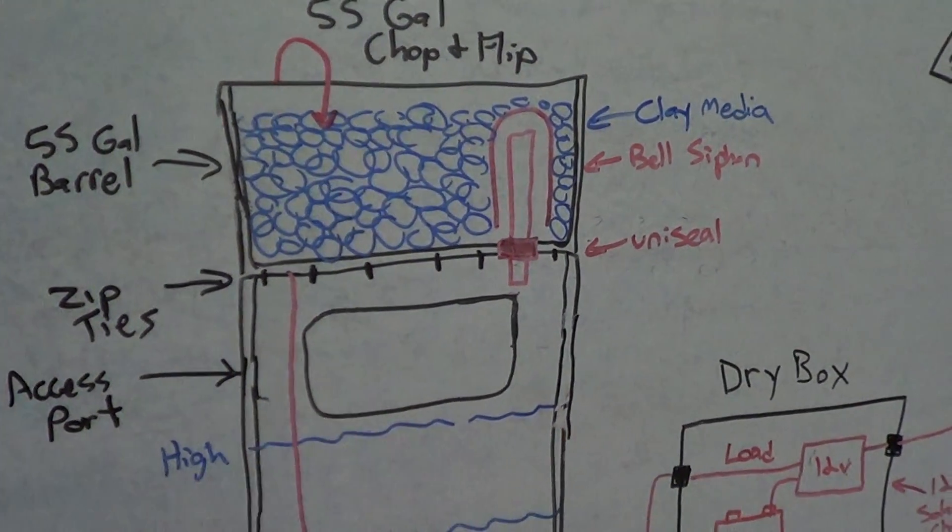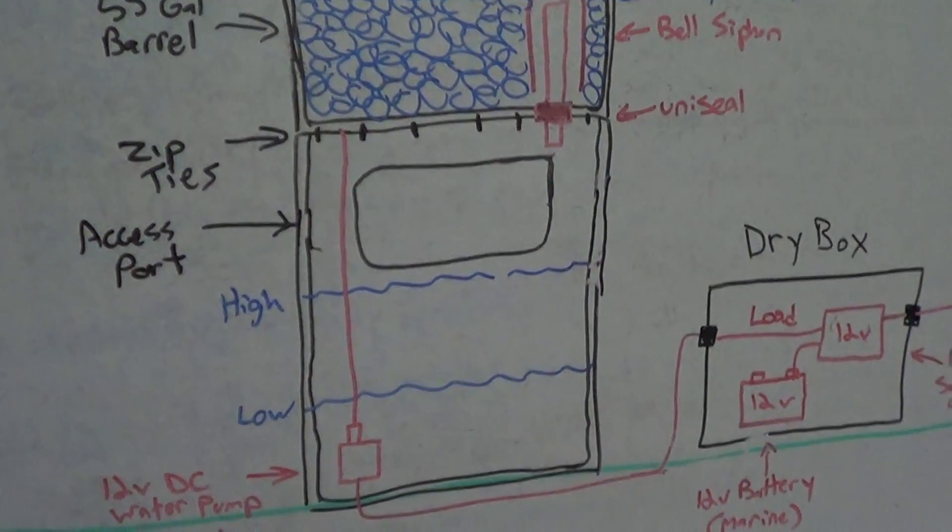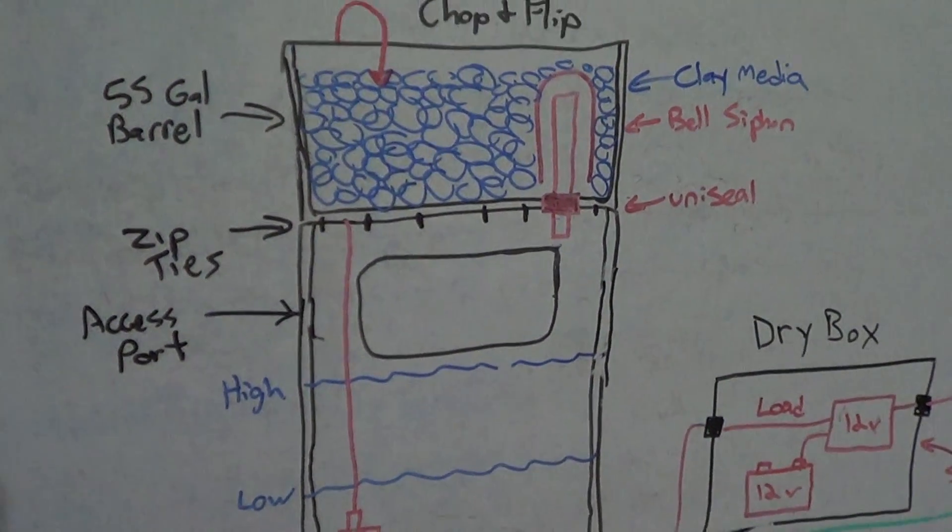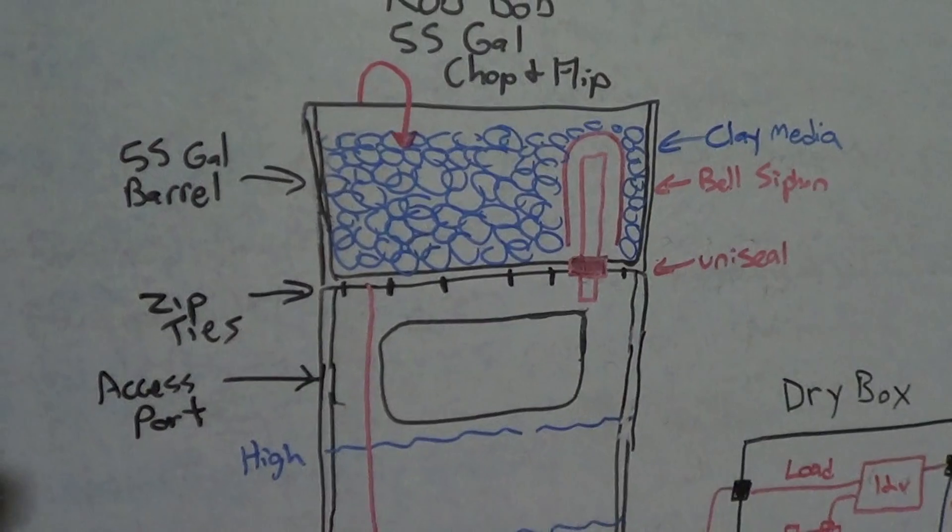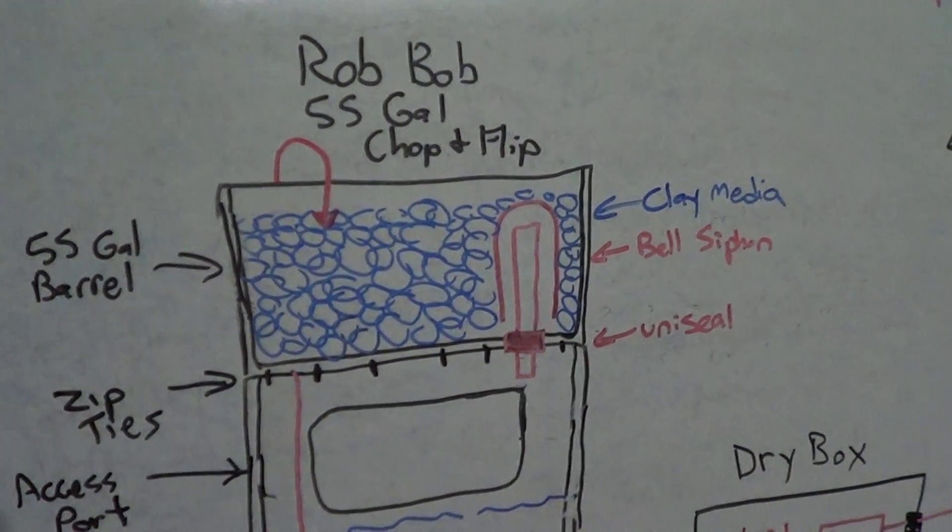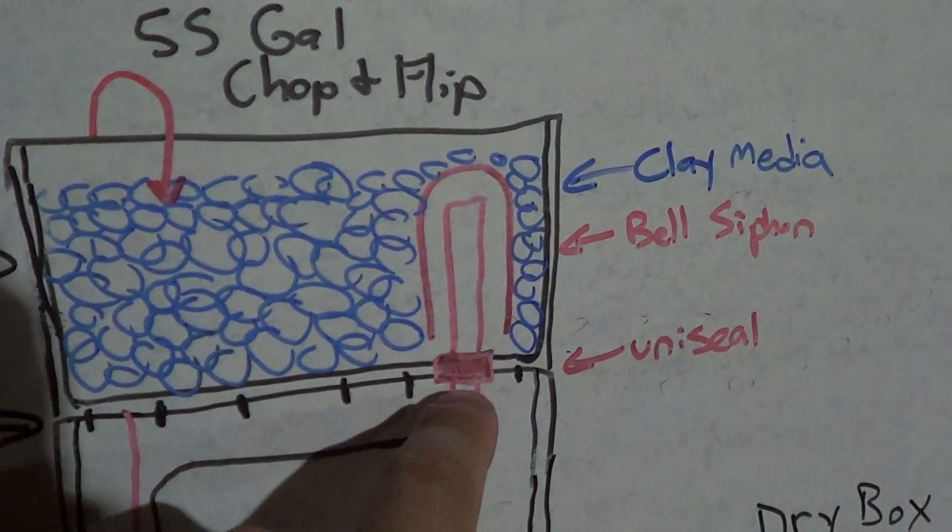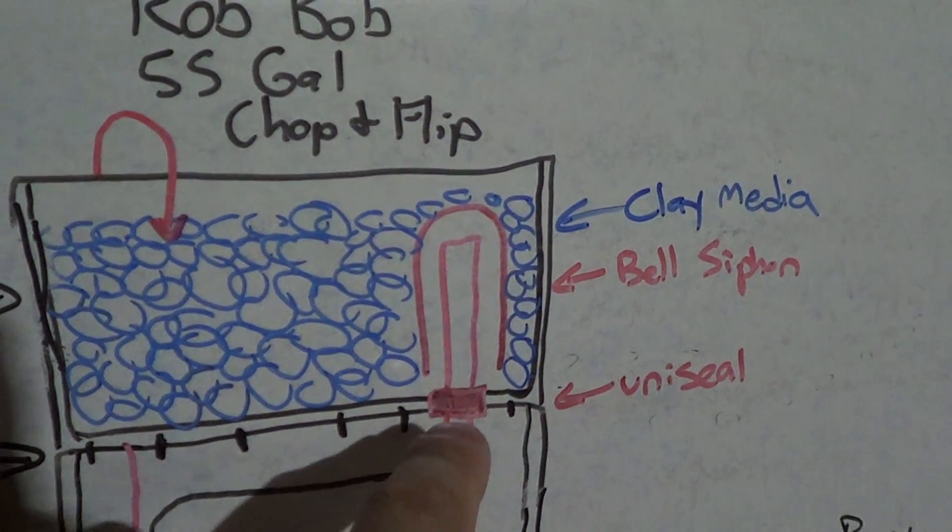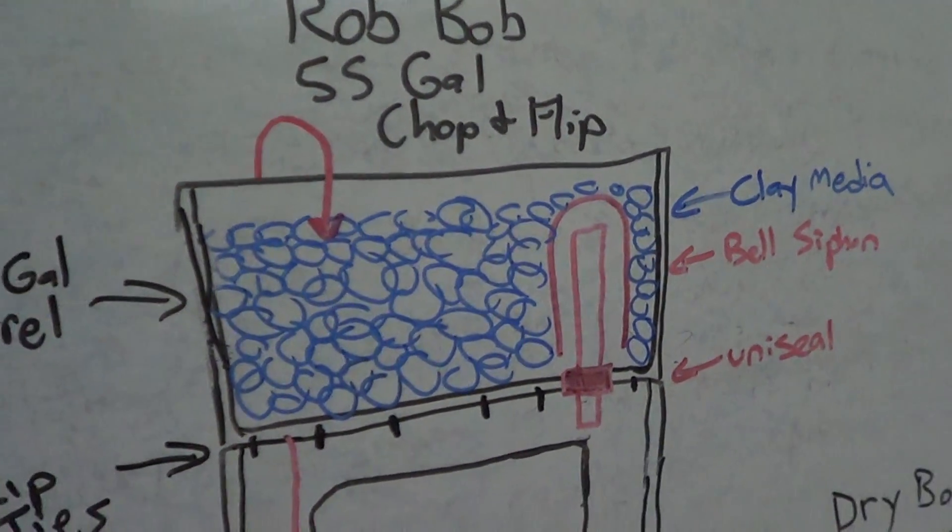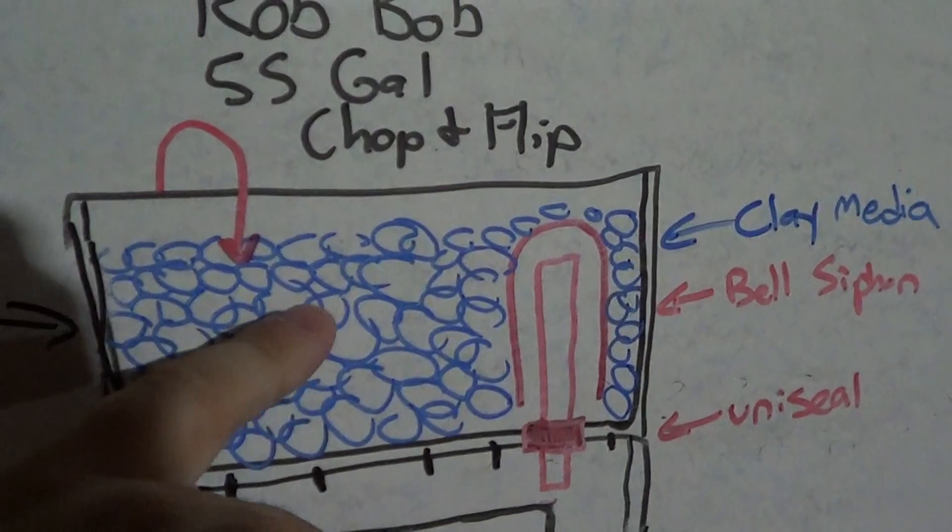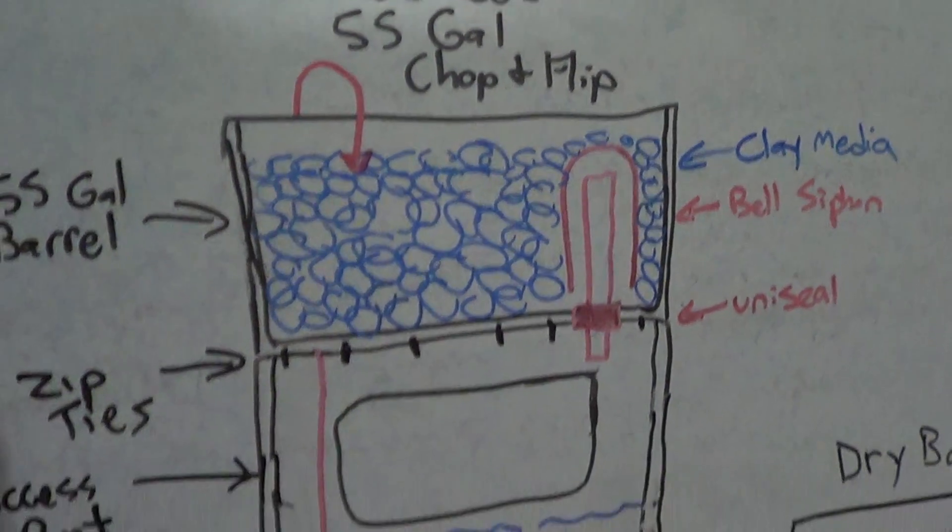You don't want to cut it too large because it will compromise the structural integrity of the barrel, but just one little port on the front would be plenty to reach your arm in there. With that, I'm planning on using a uniseal—I believe Rob Bob used a bulkhead. I will be using a bell siphon, just a traditional bell siphon, and I will be using the clay hydroton media as my media of choice here.